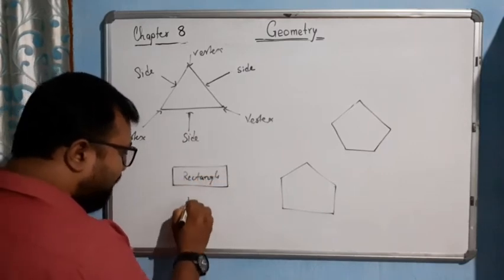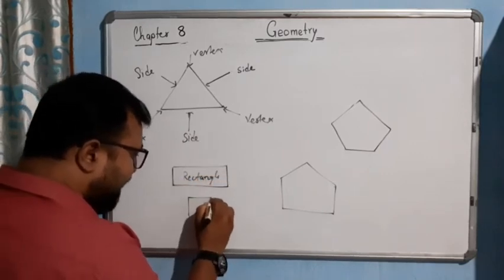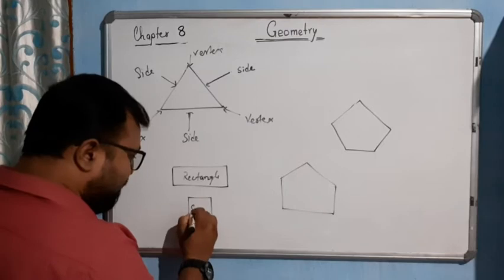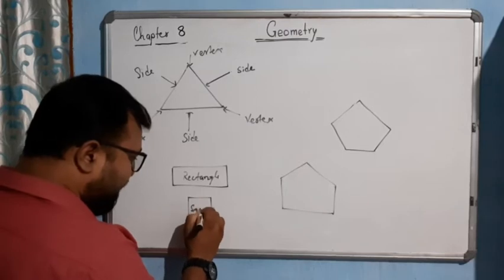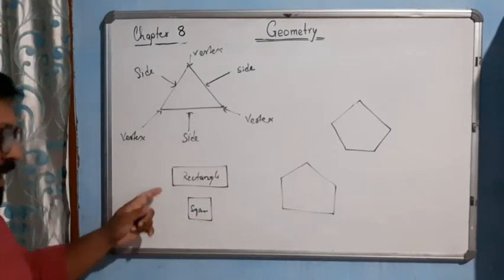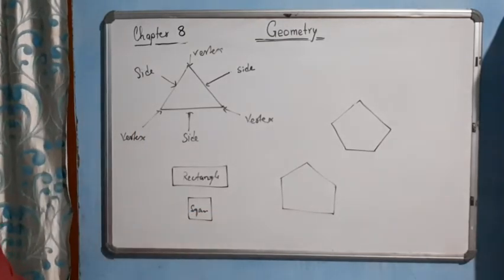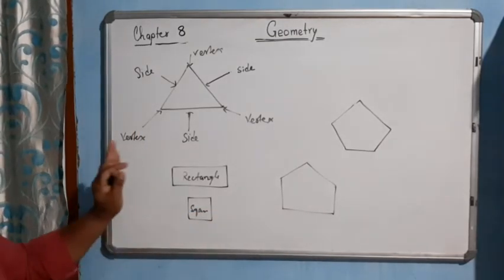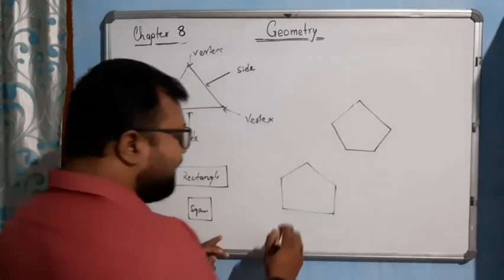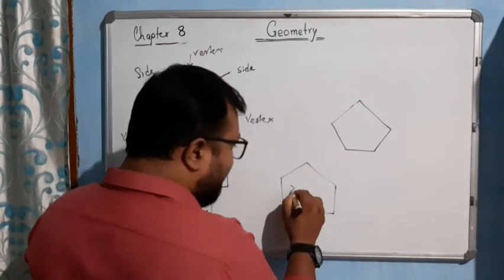If all sides are equal, then it is a square. And a square is a rectangle also — all squares are rectangles. Five sides: then it is known as a pentagon.